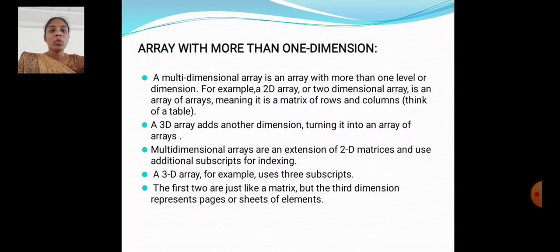A multi-dimensional array is an array with more than one level or dimension. For example, a 2-Dimensional Array is an array of arrays, meaning it is a matrix of rows and columns. A 3-D Array adds another dimension, turning it into an array of arrays of arrays. Multi-dimensional arrays are an extension of the 2-D matrix and use additional subscripts for indexing. A 3-D Array uses 3 subscripts; the first two are like a matrix, while the third dimension represents a page or set of elements.